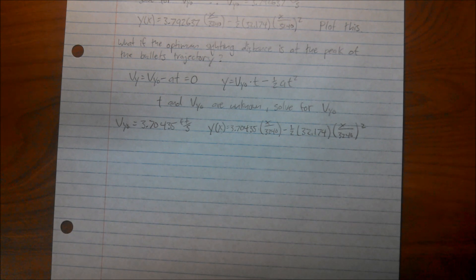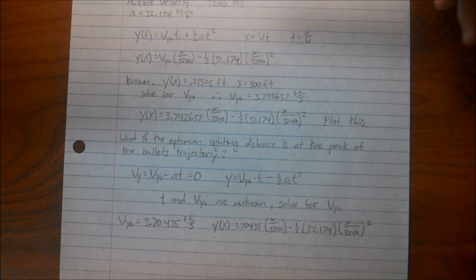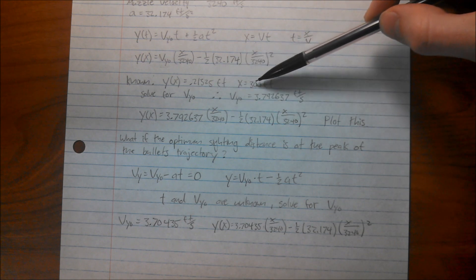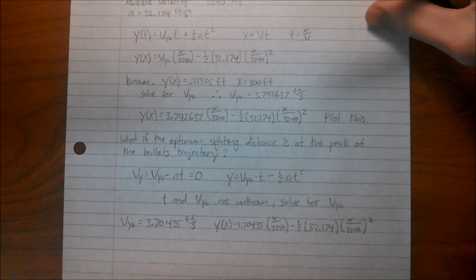And then another question, which is kind of interesting, which I did the calculations for, but I won't show you because it's pretty much the same as the first set of calculations. But instead of using x equals 300 feet, we use x equals 150 feet, which is equivalent to 50 yards.